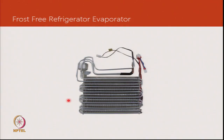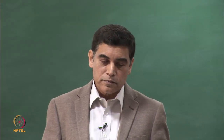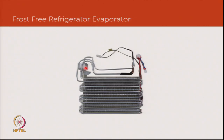A frost-free refrigerator evaporator is similar to fin-on-tube evaporators, but again all-aluminium for both the tubes and fins. There is an accumulator and a short extension piece that connects to copper tubes at the manufacturer's end. A sensor device is included to monitor when the defrosting cycle needs to kick in. This is an example of a frost-free refrigerator evaporator.